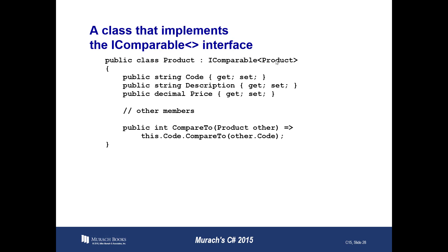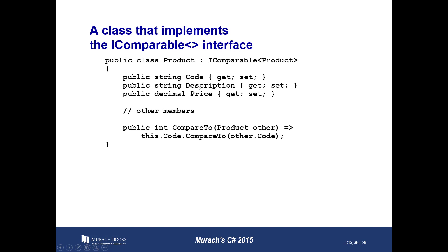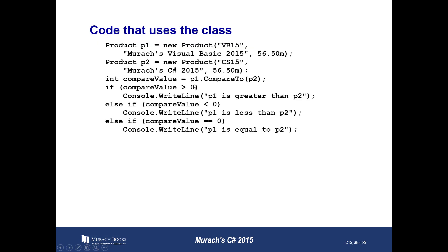The CompareTo method returns an integer value that determines if the current element is less than, equal to, or greater than the element that's being passed in. It returns a negative value if it's less than, zero if it's equal to, and positive one if it's greater than. Examples of this code can be found on page 497 in the text.